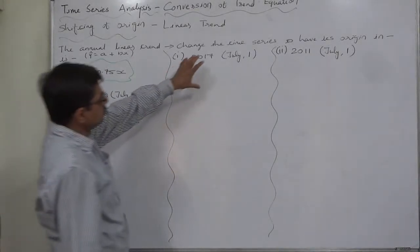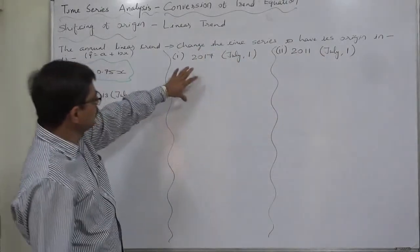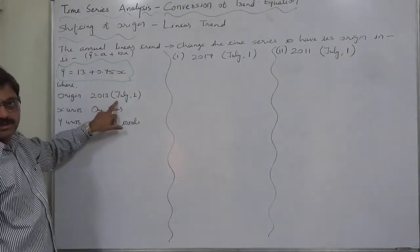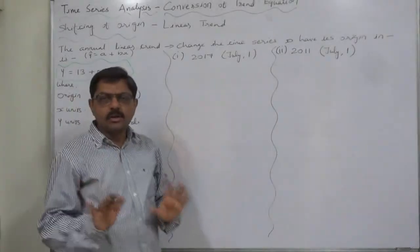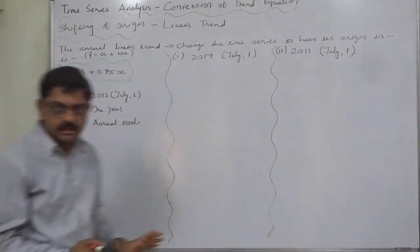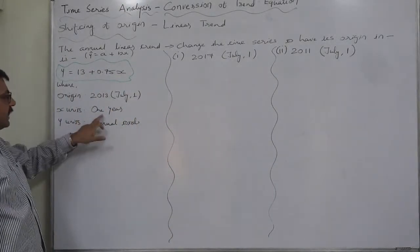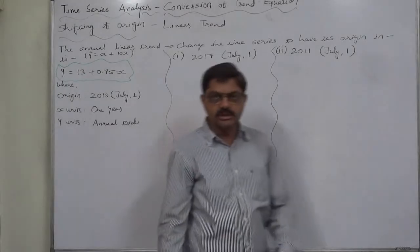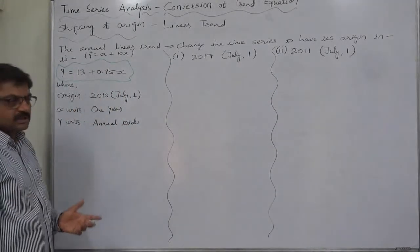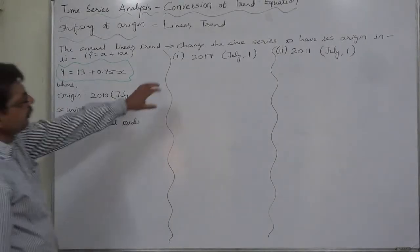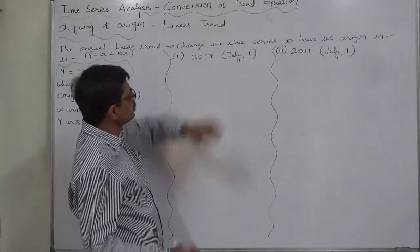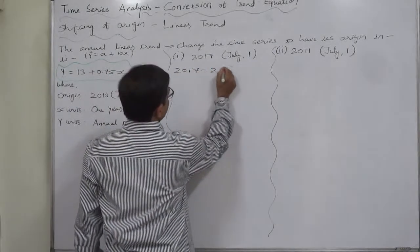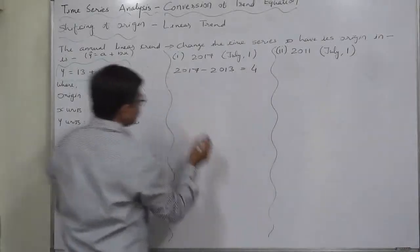Now we need to change the time series to have its origin first in 2017 July 1, against the original origin of 2013 July 1. x units are on one year and y units are on annual total. y can be any numerical value which is the subject of our interest. From 2013 July 1 we need to change the origin to 2017 July 1. 2017 minus 2013 equals 4, and 4 is positive, meaning we want to shift the origin forward.